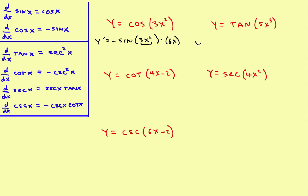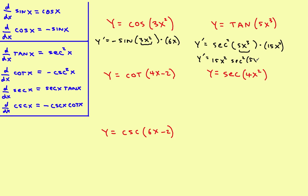Let's try a tangent one. Y prime: the derivative of the tangent is secant squared. So this will be secant squared of the inner part — that's the derivative of the outer part. Rewrite the original inner part, times the derivative of what's on the inside, which would be 15x squared, and you are done. If you want, you can move the 15x squared out in front, giving 15x squared times secant squared of 5x cubed.